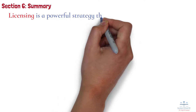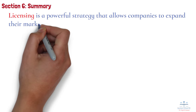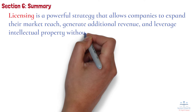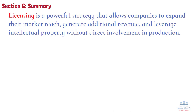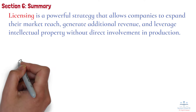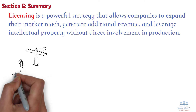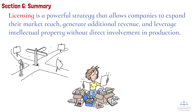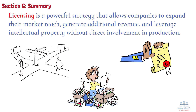Section 6: Summary. To sum up, licensing is a powerful strategy that allows companies to expand their market reach, generate additional revenue, and leverage intellectual property without direct involvement in production. Whether through trademark, patent, or copyright licensing, this model offers flexibility and opportunities for both licensors and licensees. However, managing the risks associated with licensing agreements, such as loss of control and legal challenges, is essential for success.